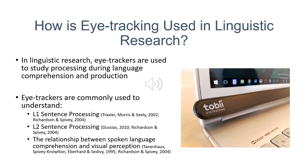Today, eye trackers are much less invasive. Often they are simply attached to the computer that presents study stimuli to the participants, as seen in this picture here. Eye trackers are also used in many different areas of research to infer mental processes of study participants. In linguistics, eye trackers are commonly used in studies investigating first and second language sentence processing during reading, and the relationship between spoken language comprehension and the perception of visual stimuli.